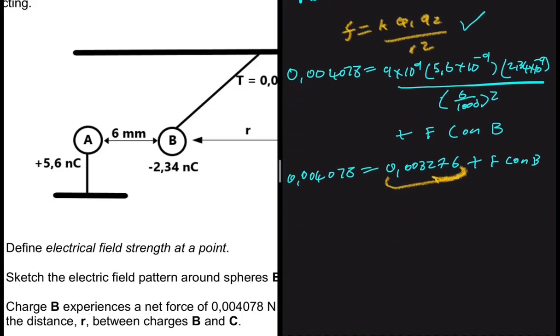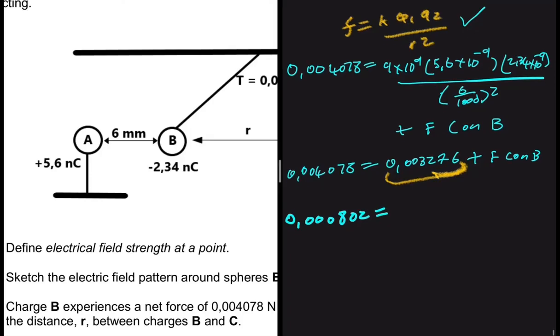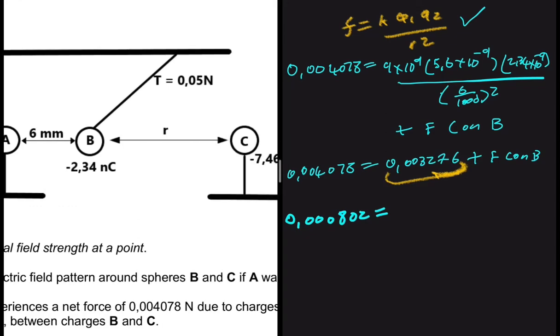So now it's just a matter of taking this term to the left hand side. And we have F of C on B. If you do that, you get 0.000802. When you solve for F of C on B.